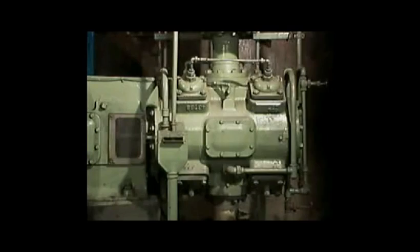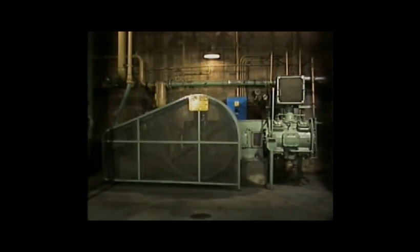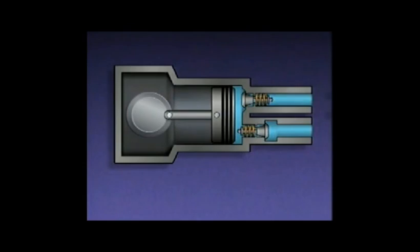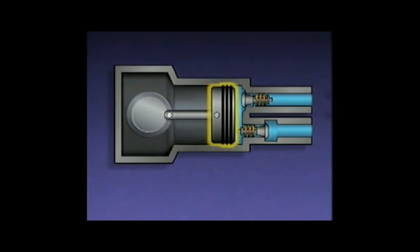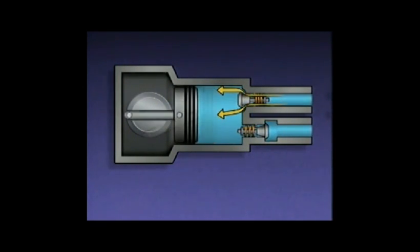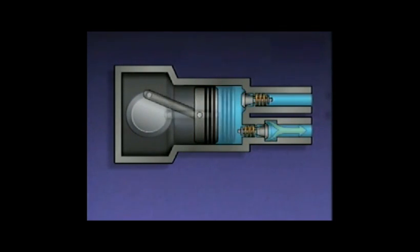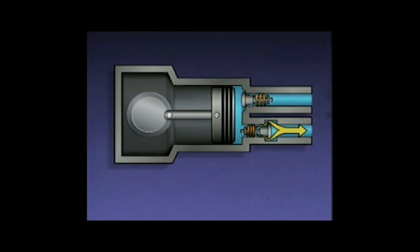Compressors can be divided into two general categories: positive displacement compressors and dynamic or centrifugal compressors. Positive displacement compressors work by trapping a certain amount of gas and forcing it into a smaller volume. A common type is a reciprocating compressor, which uses a cylinder and a piston. Gas enters the cylinder, is trapped inside, and is then forced into a smaller space by the piston, increasing its pressure. The compressed gas is then discharged.